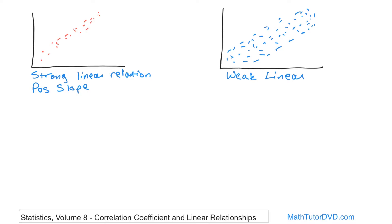So we have a weak linear relationship here, again with a positive slope, just because it slopes up and to the right.